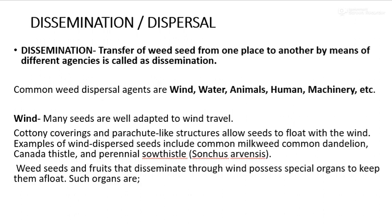The first agency is wind. Many seeds are well adapted to wind travel. Due to their structure, weed seeds can be easily transferred from one place to another. Cottony covering and parachute-like structures allow seeds to float with the wind. Examples of wind-dispersed weed seeds include common milkweed, common dandelion, Canada thistle, and perennial sowthistle.